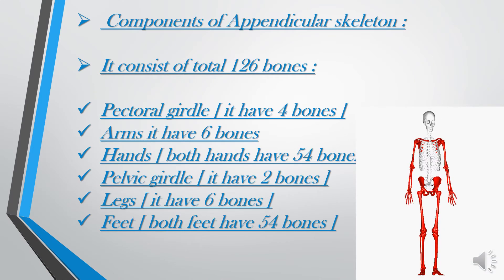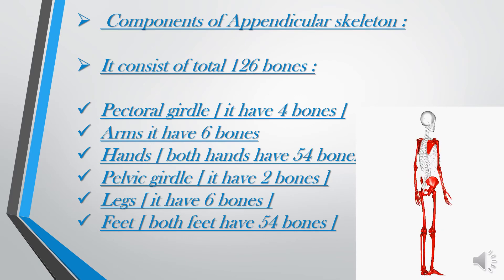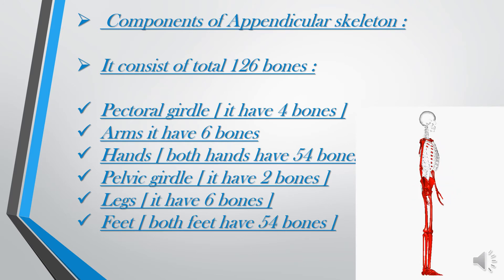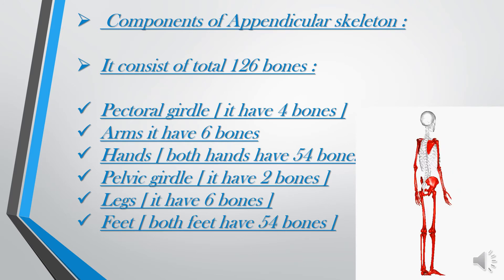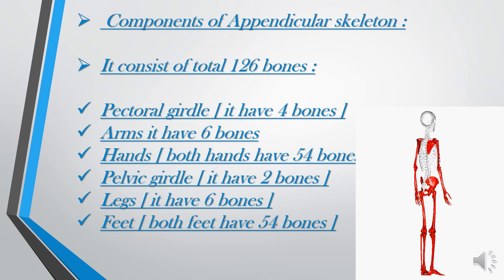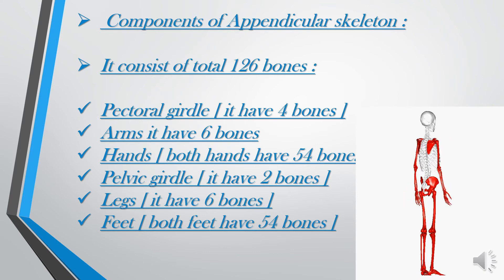Components of the appendicular skeleton: it consists of a total of 126 bones. The pectoral girdle has 4 bones. The arms have 6 bones. Both hands have 54 bones. The pelvic girdle has 2 bones. The legs have 6 bones, while both feet have 54 bones.